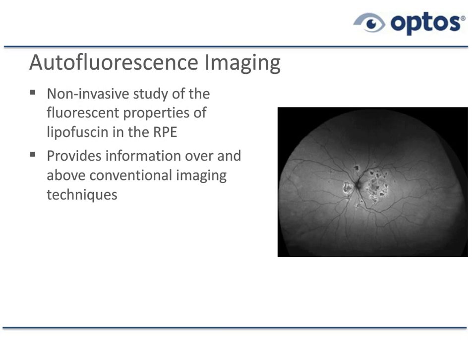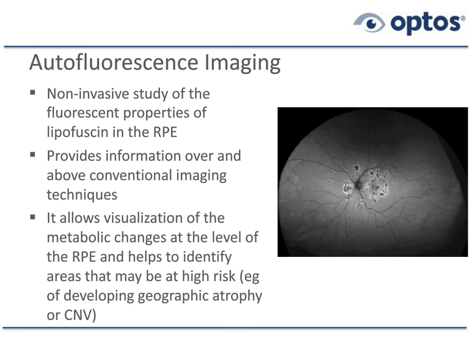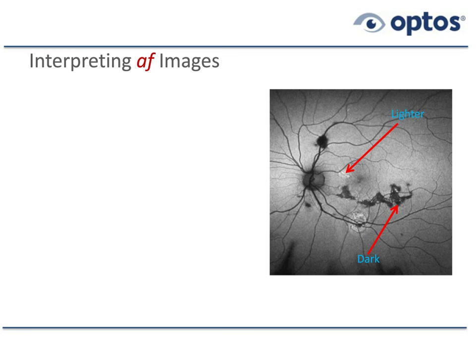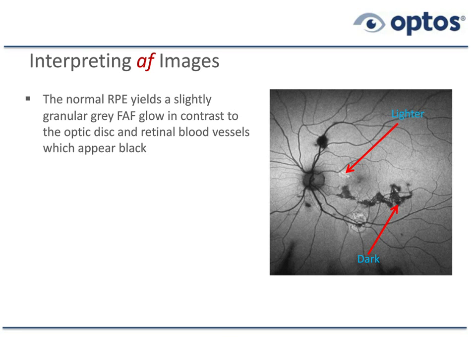AF provides information over and above conventional imaging techniques. We'll give examples where the autofluorescence image is abnormal but the standard color image or binocular indirect ophthalmoscope view is normal. AF allows us to visualize metabolic changes at the level of the RPE and helps identify high-risk areas, such as in patients with geographic atrophy or CNV. In a normal autofluorescence image, the disc and vessels appear dark because there's no lipofuscin — the aging pigment that gives us the autofluorescent property.